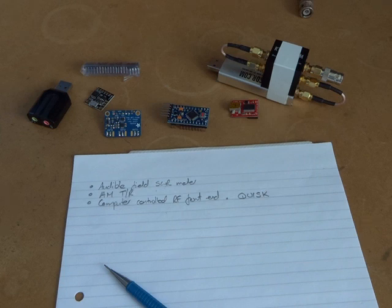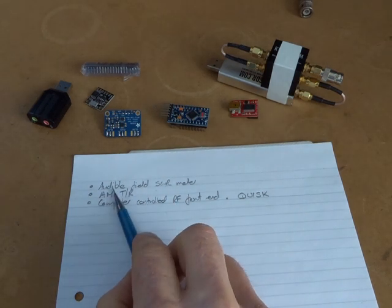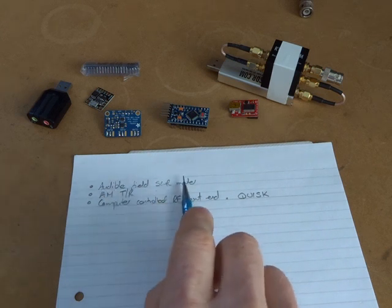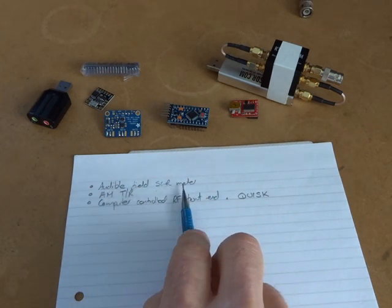The first one is an audible field SWR meter. With the nice weather coming on, it's going to be good to get outside and start using some of those portable kits. It might be nice to play around with a suggestion that was made some time ago to build an SWR meter that uses audio as the user interface as opposed to a meter. That would be quite interesting.